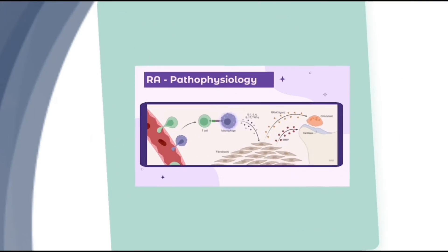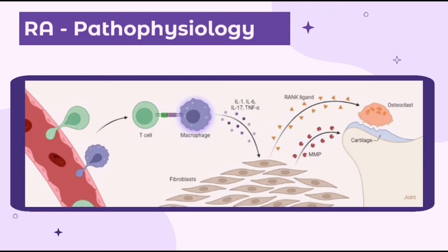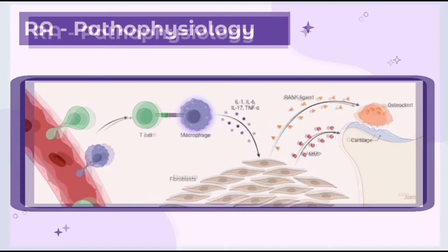Now let's look at the pathophysiology of rheumatoid arthritis. First, it all starts when a CD4 T helper cell is activated. The T cell will release cytokines such as interferon-gamma and interleukin-17. Then, macrophages are recruited to release more cytokines such as tumor necrosis factor TNF-alpha, interleukin-1, and interleukin-6.